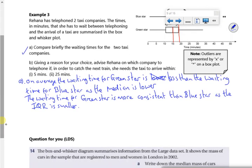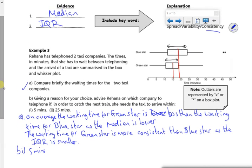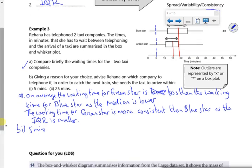Part B says give a reason for your choice if you want it to arrive within 5 minutes or 25 minutes. So let's have a look at 5 minutes then. If you look at 5 minutes, there's no difference there. So 5 minutes, who cares? No difference.